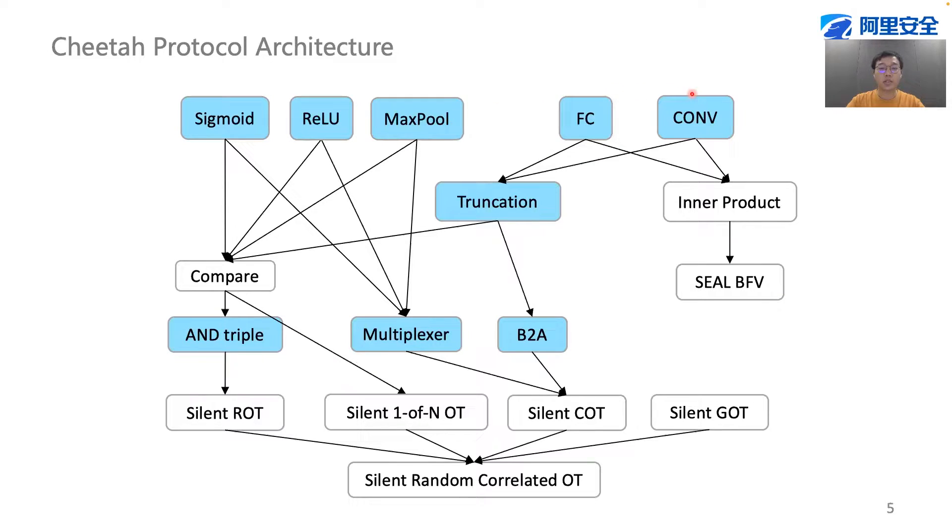The linear computations, such as fully connected layers and convolution layers, can be broken down into inner products of vectors, which is implemented with SEAL-BFV in a highly optimized manner.